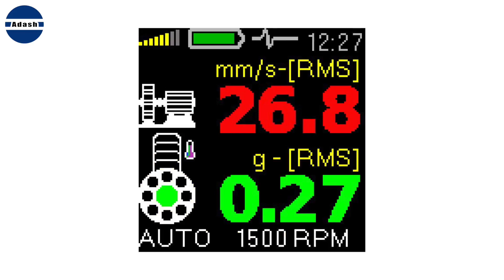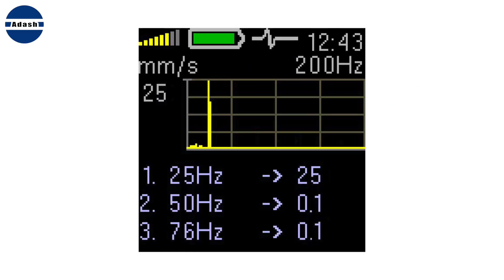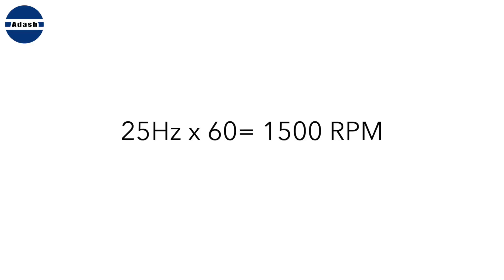If the velocity value is high, then you need to look at the spectrum screen. If the spectrum contains only one high line on the speed frequency, then the unbalance is the failure. For example, on this spectrum is only one high line on 25 Hz. When you multiply 25 times 60, you obtain 1500 rpm. If the speed is 1500 rpm, then unbalance is the failure.